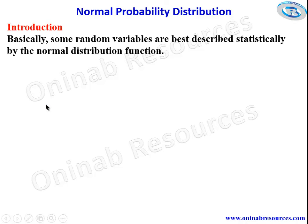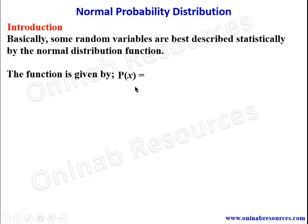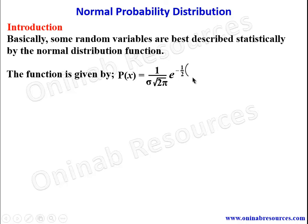Basically, some random variables are best described statistically by the normal distribution function. The function is given by p(x) = 1 over (standard deviation times square root of 2π), times e raised to the power of negative one-half times ((x minus the mean) over the standard deviation) all squared.